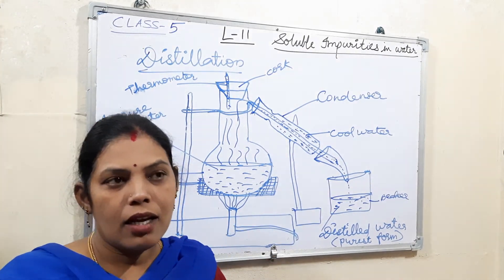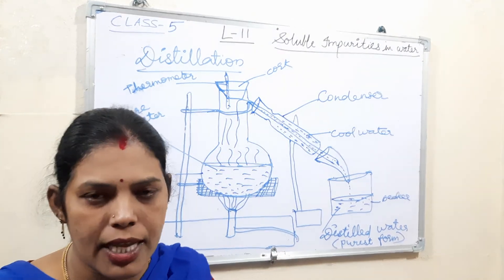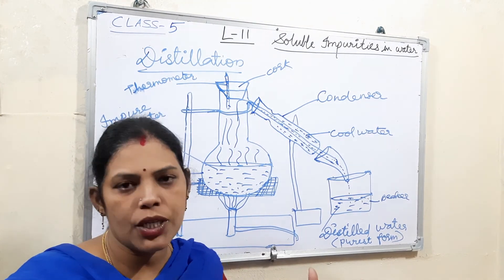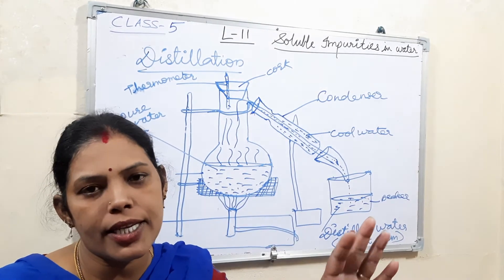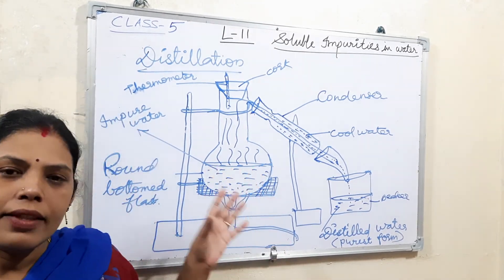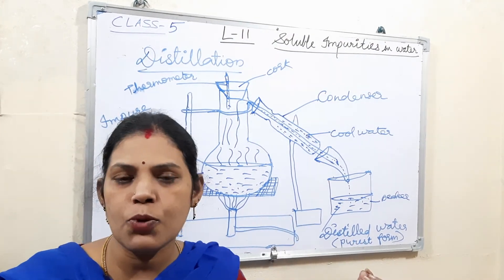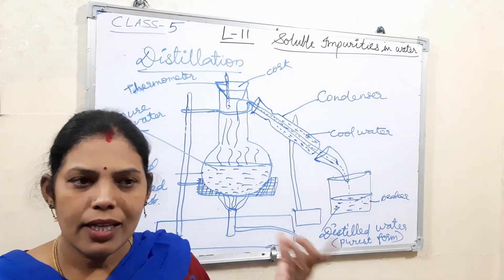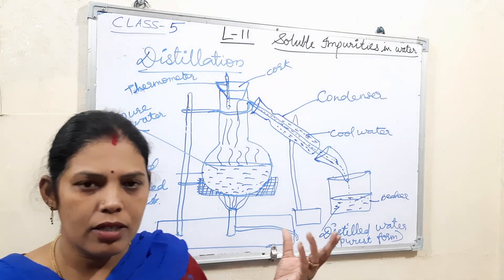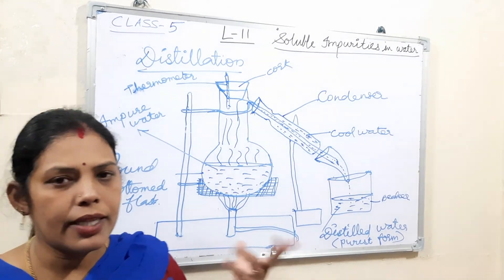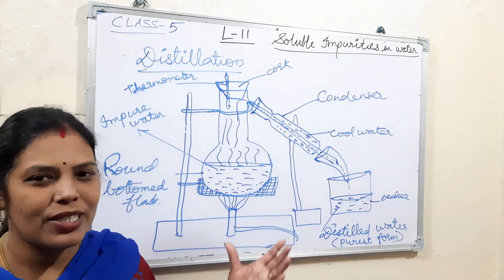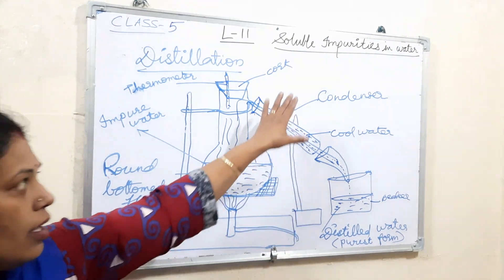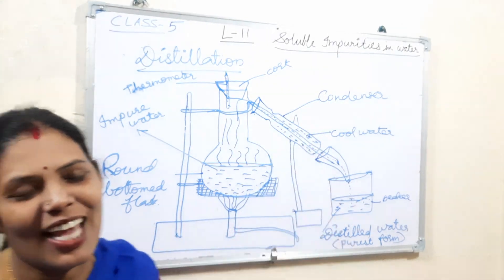Distilled water is also used in car batteries, inverter batteries, and in manufacturing. Mainly in laboratories, experiments are done using distilled water only because it is pure and contains no salts, so no unwanted reactions occur. In tap water there may be salts and impurities. This is the best method to get the purest form of water. Thank you, children, have a nice day.